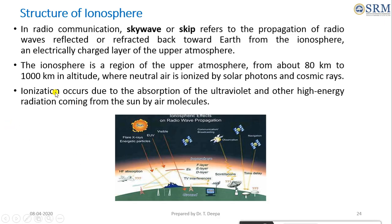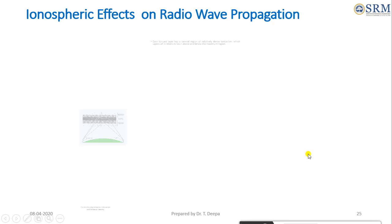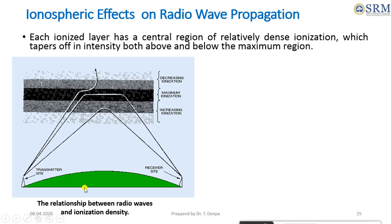The ionization occurs due to the absorption of ultraviolet and high energy radiation coming from the sun by air molecules. A figure shows the relationship between radio waves and ionization density. The ionization density is formed in the form of three regions: decreasing ionization, maximum ionization, and increasing ionization.